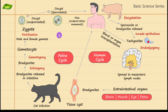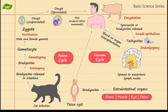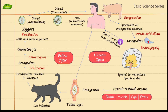The zygote forms right here and from the zygote it gets converted into an oocyst — the unsporulated oocyst, which does not yet have spores. Now you can connect all the dots, because the next step is the sporulated cyst forming from the unsporulated oocyst, completing the cycle.